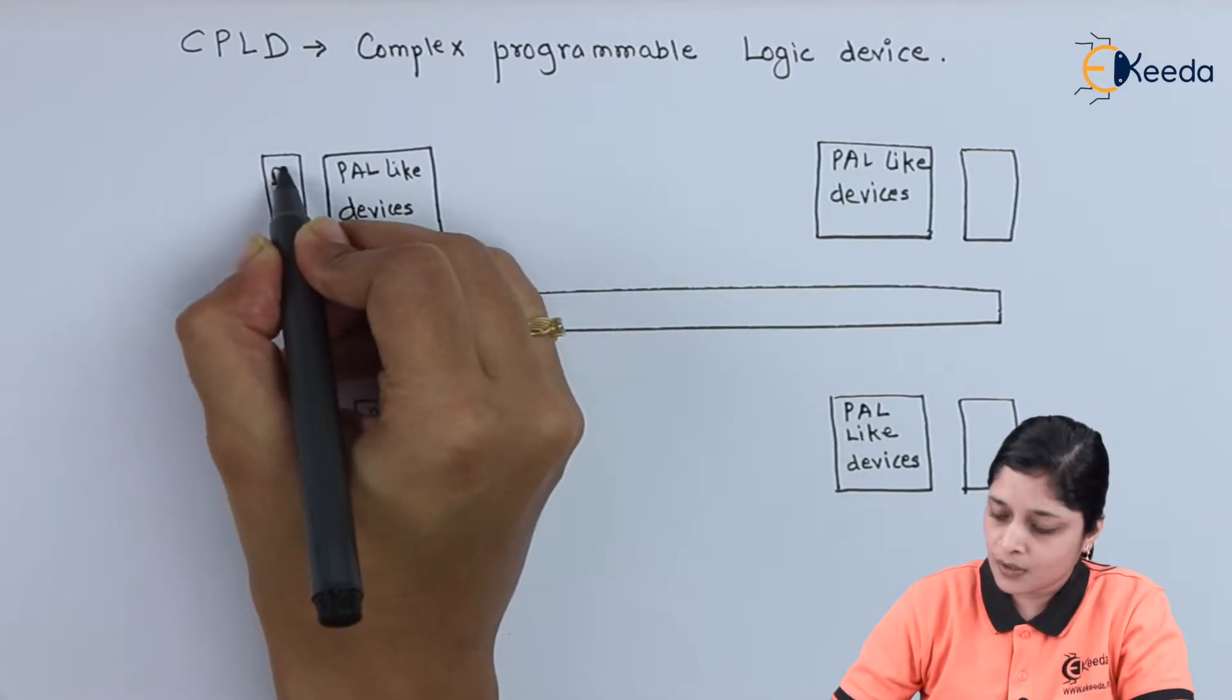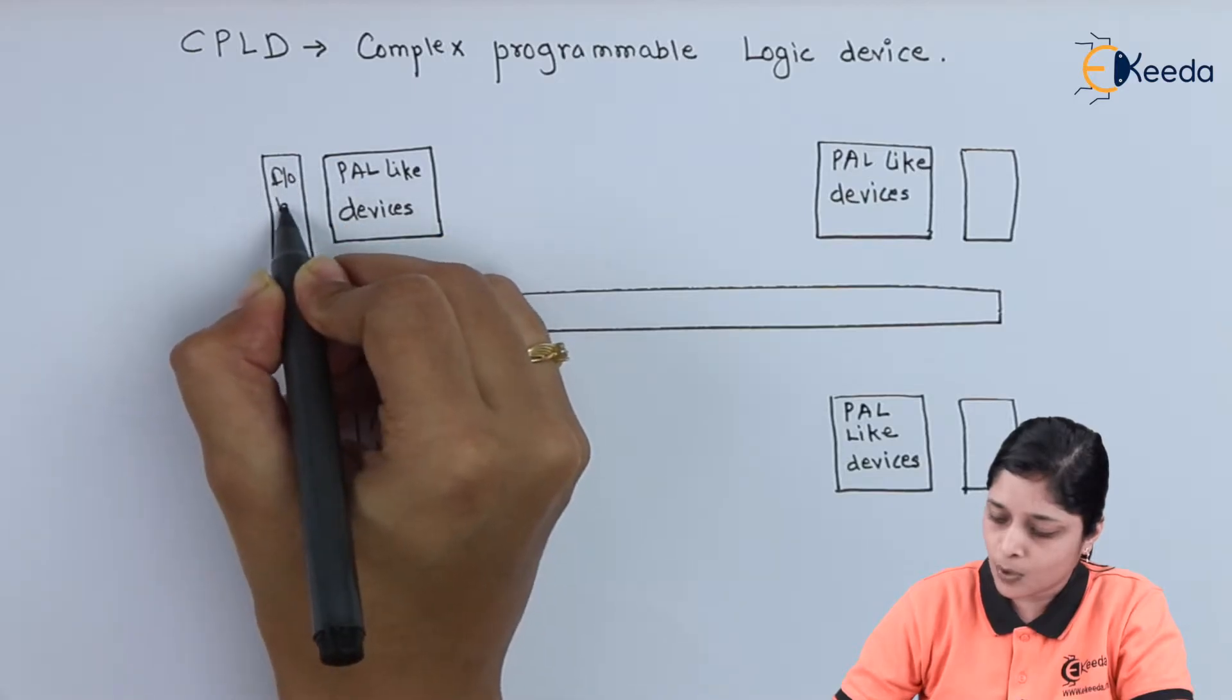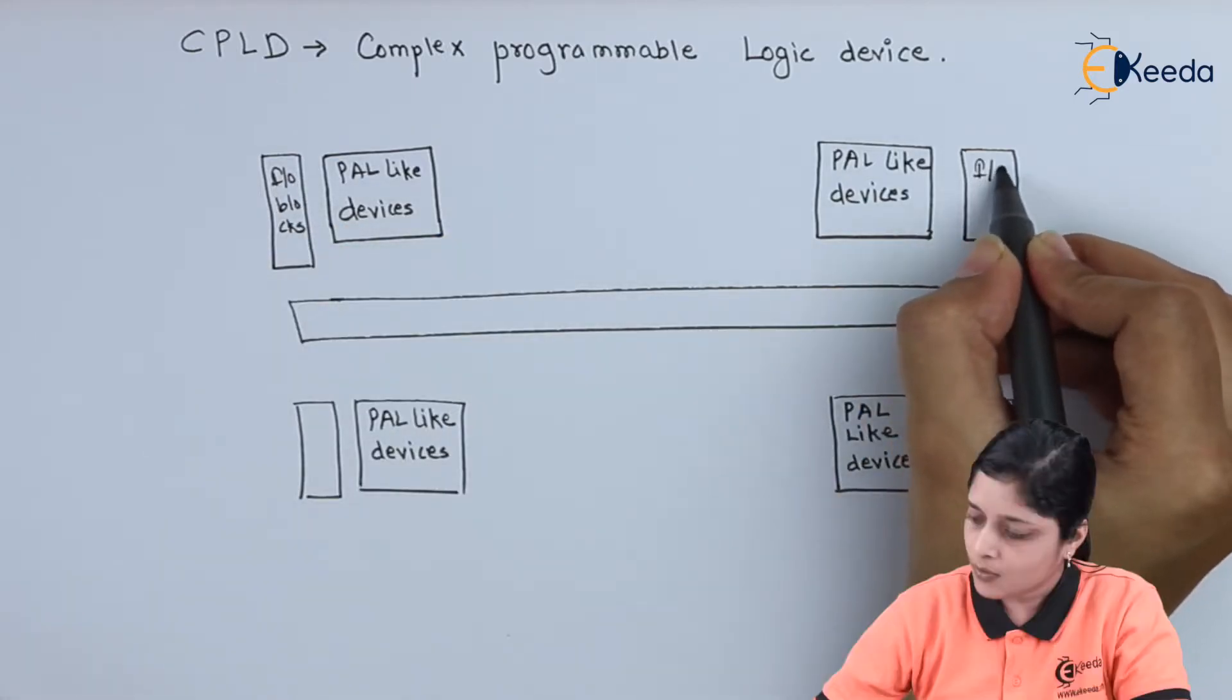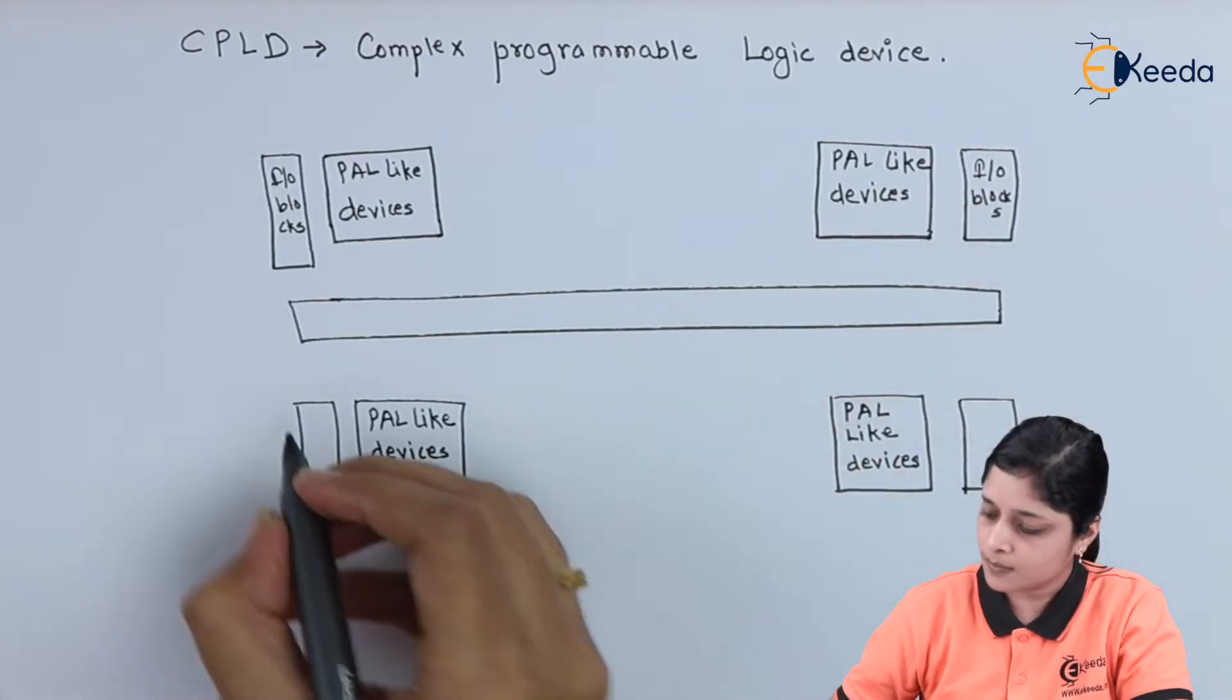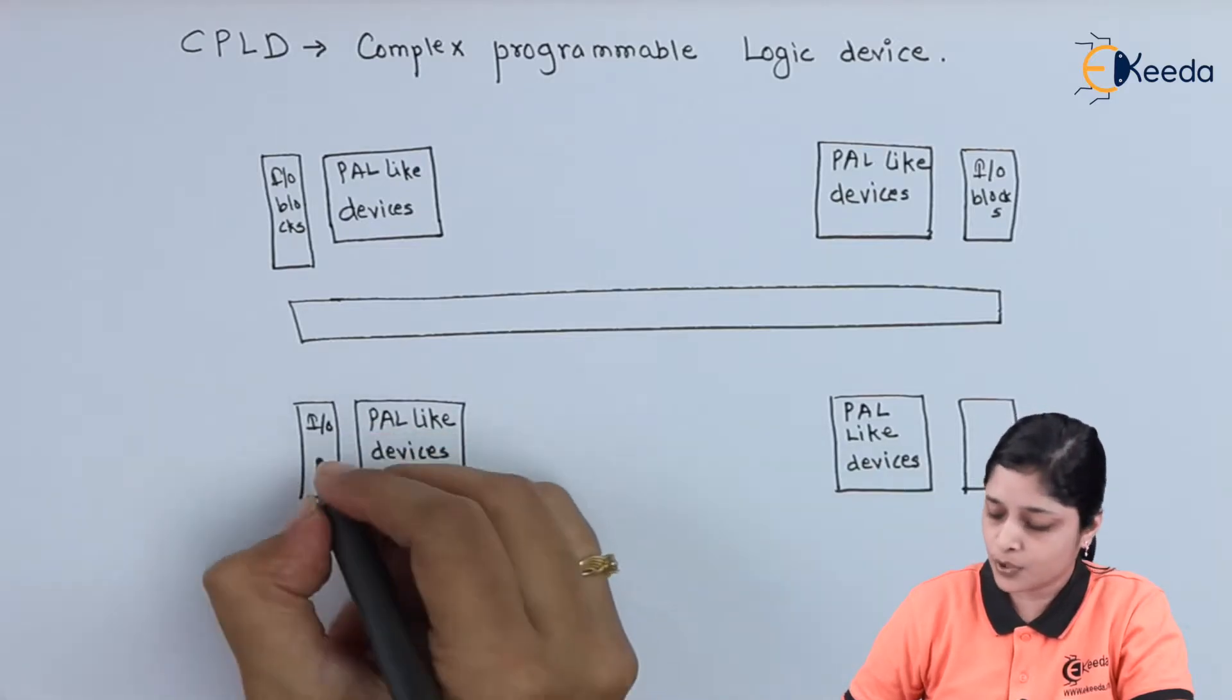These are your IO blocks. All these blocks are IO blocks, that is input-output.